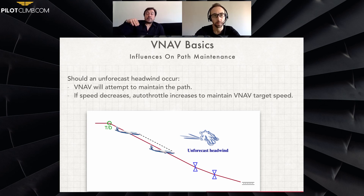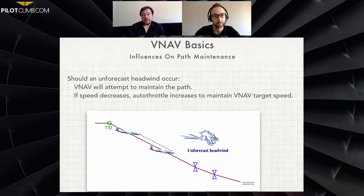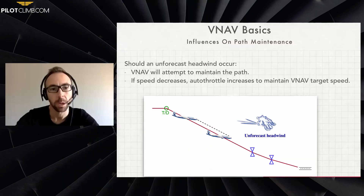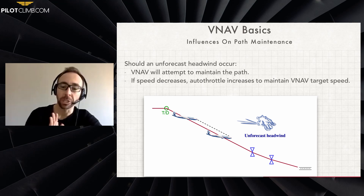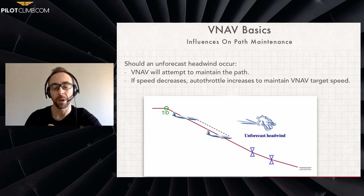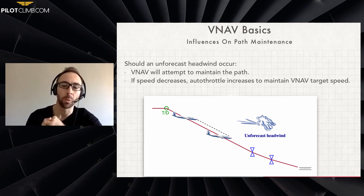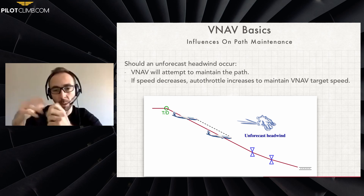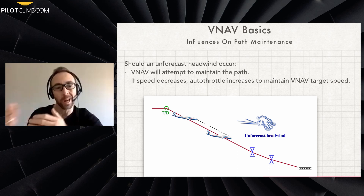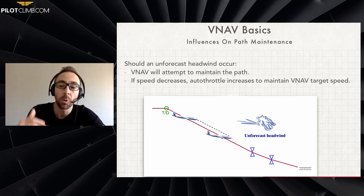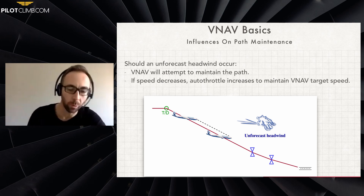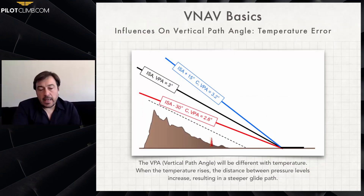With a headwind, the system is going to maintain the path but needs more thrust — because at idle thrust we lose some speed, and if the speed decreases the autothrottle increases thrust to maintain the VNAV speed target. It's the opposite situation. This is important to understand: we're talking about unforecast wind — something we couldn't plan for. Normally we enter the wind into the FMC and it calculates a good path accounting for that wind, but if the headwind or tailwind is higher than what was entered, that's when this happens.